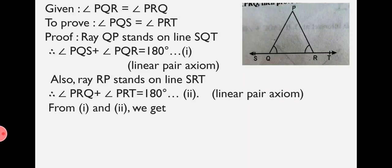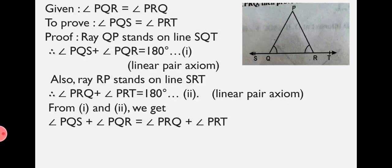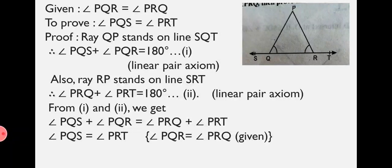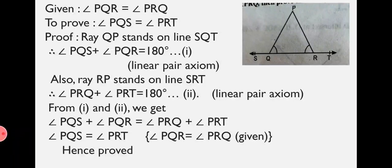From equations 1 and 2, we get Angle PQS plus Angle PQR equals Angle PRQ plus Angle PRT. As both right-hand sides are equal to 180 degrees, we compare left-hand sides. Since Angle PQR equals Angle PRQ, both sides cancel, and we get Angle PQS equals Angle PRT. Hence proved. It is necessary to write 'Hence proved' at the end of solutions where we have to prove a statement.